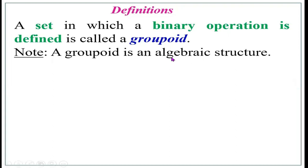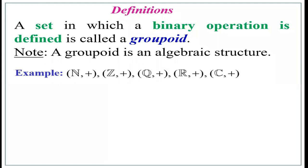The important thing is: when you say algebraic structure, we give the structure form, that is G comma circle. Examples: addition is a binary operation on the set of natural numbers, integers, rationals, reals, and complex numbers. Hence N comma plus, Z comma plus, and so on are groupoids, and they are also known as algebraic structures.